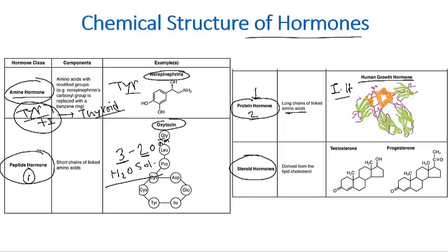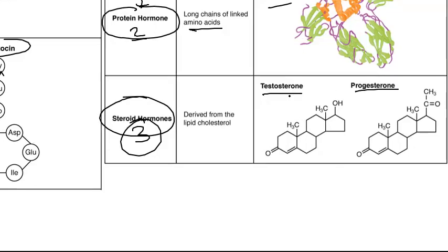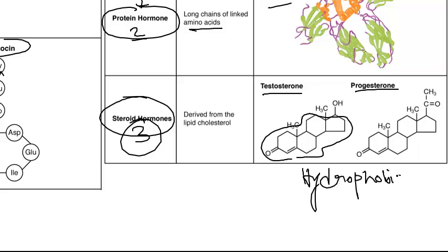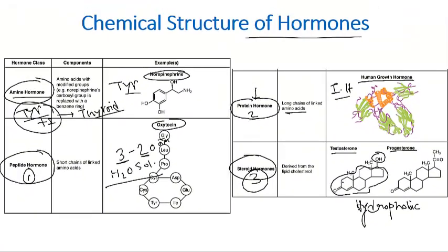The third class is steroid hormones. Steroid hormones are derived from cholesterol — that's why they're called steroids. Examples include testosterone and progesterone; all sexual hormones are steroid in nature. Most of their chemical constituents are hydrophobic, so they only have a hydroxyl group as a hydrophilic region, with the rest of the hormone being hydrophobic.